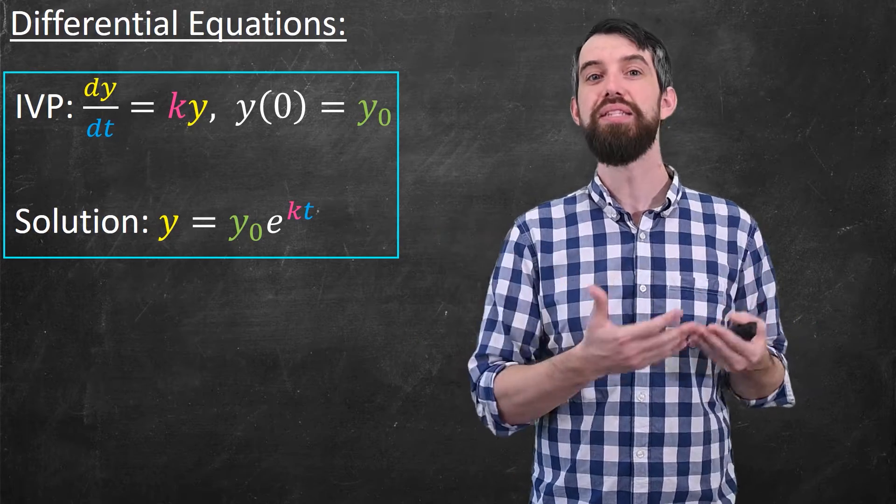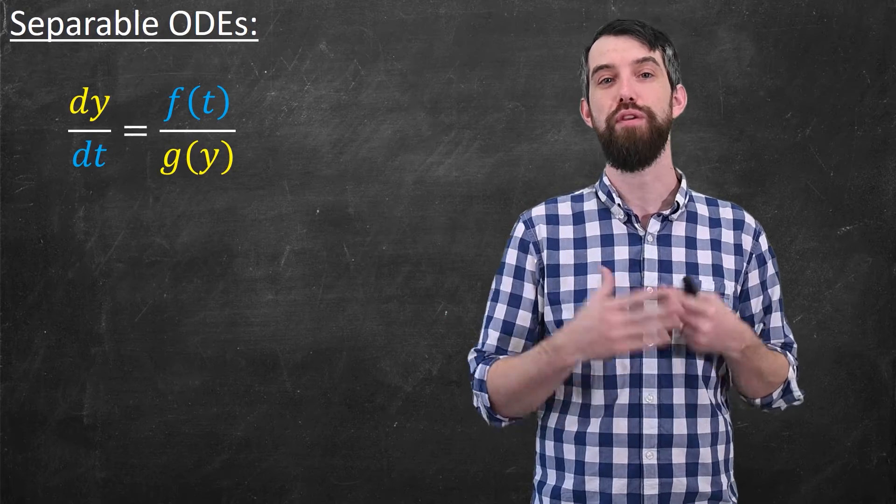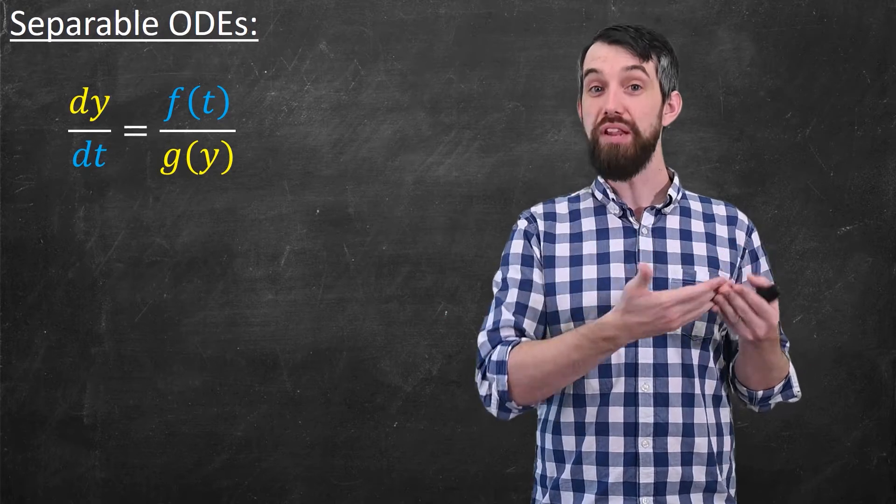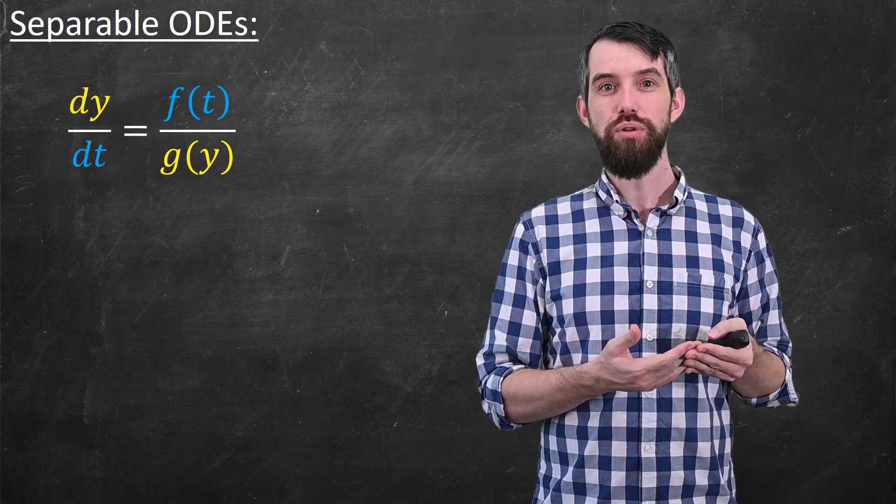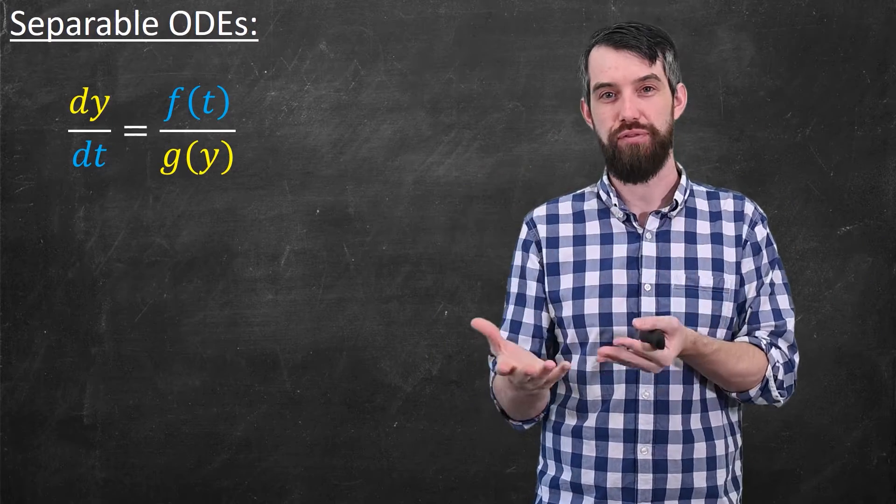We can do the same basic idea for more general separable equations. Consider, for example, the following. I want to have a rate of change, dy/dt, is equal to a specific form. This is a class of ordinary differential equations.